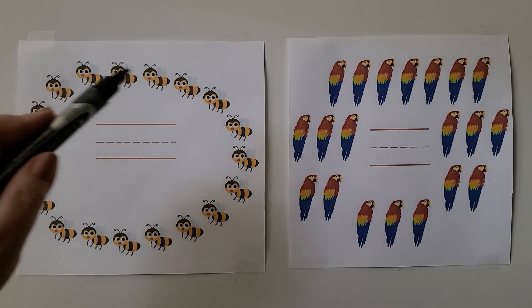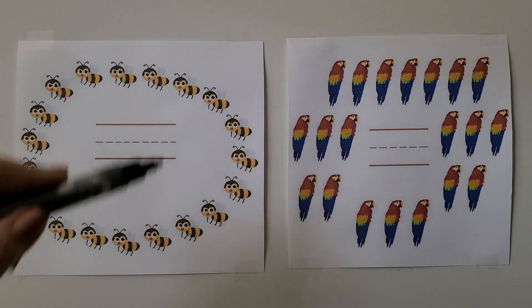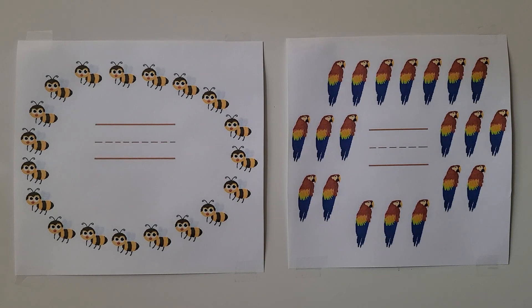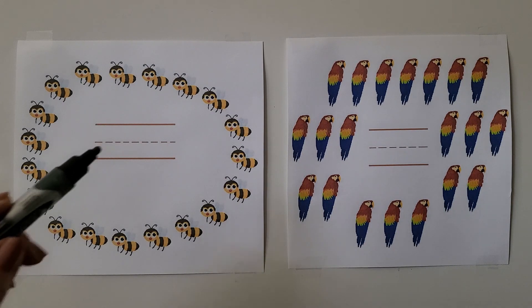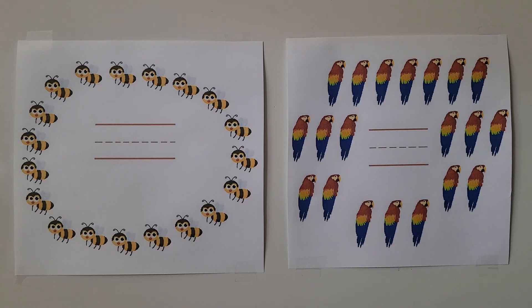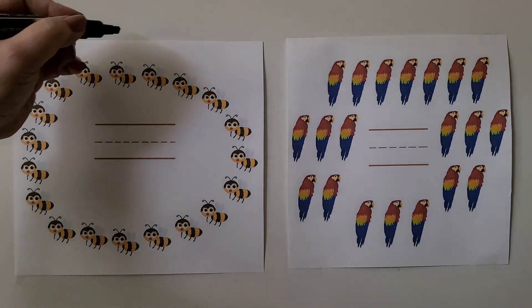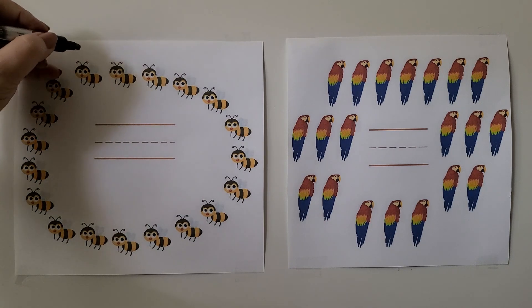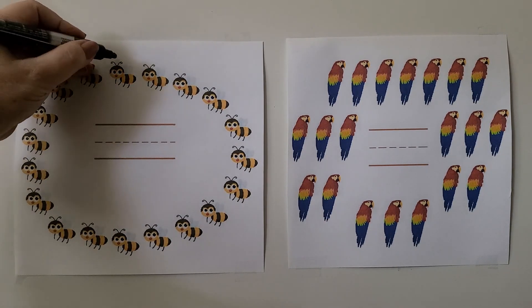Here we have a circle of many bees. We need to count them and write the number. We can put a dot by each bee as we count around, so we know which bees we have counted. We go around the circle in one direction. We can start anywhere. We can start at the top right here and say one, two...